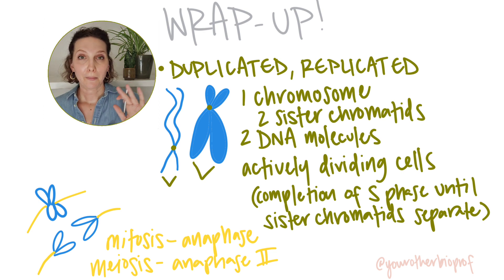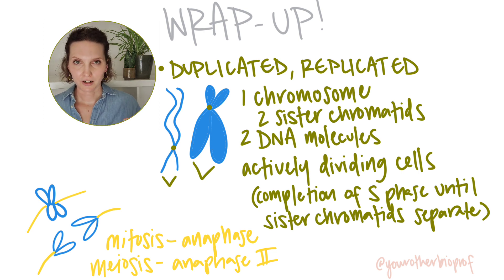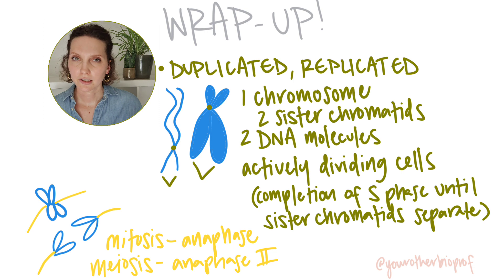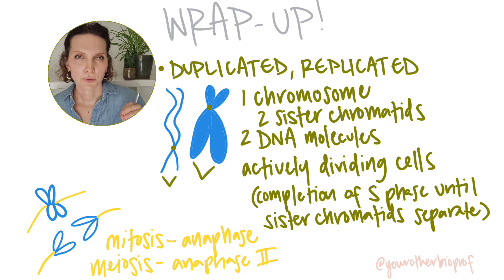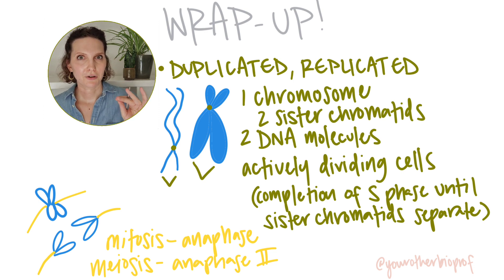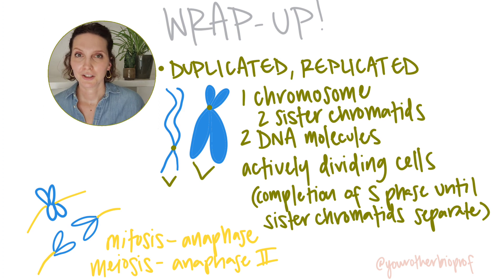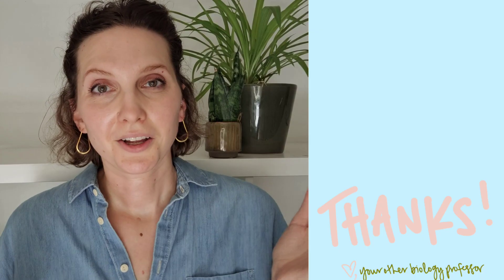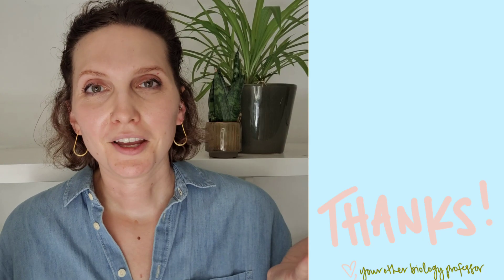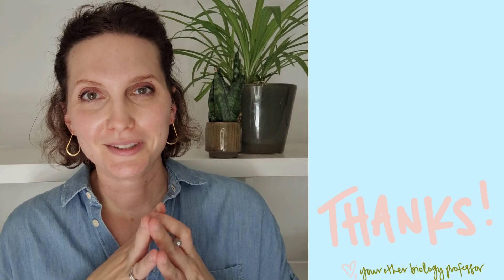Because they appear and then disappear at set stages in the cell cycle, the presence of duplicated chromosomes is always a really great clue on exam questions as to which stage of the cell cycle you're in. Good luck identifying those chromosomes.